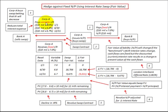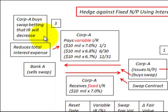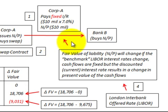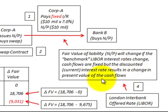Corporation A is going to pay a variable rate on this interest rate swap, also for $10 million — the same amount as the notes payable. While they pay the variable rate, they receive a fixed interest rate on this swap from Bank A. Corp A is buying this swap betting that the interest rate is going to decrease, which will reduce the total interest expense. The fair value of the notes payable liability will change if the benchmark LIBOR interest rates change, because the cash flows are fixed but the current discount rate changes the present value of those cash flows.